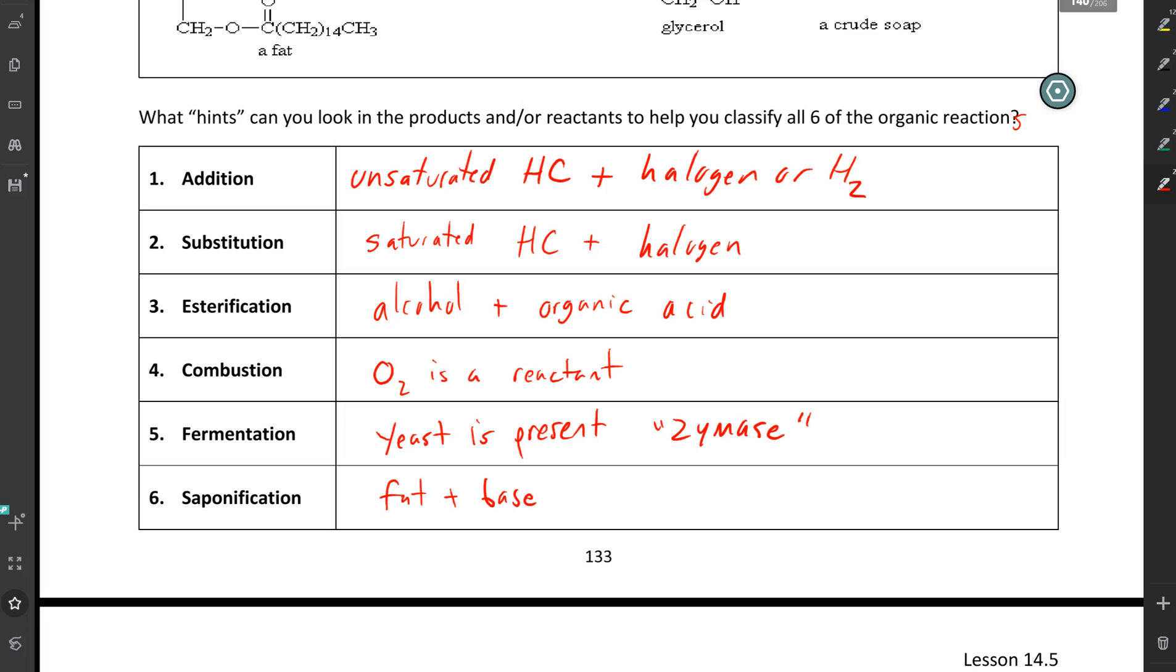A lot of students confuse addition and substitution. They're very similar, both call for a hydrocarbon plus a halogen, but in a substitution reaction, you need a saturated hydrocarbon. It only works with alkanes. We're going to substitute out one hydrogen on the hydrocarbon at a time, and you really don't know about one. It's going to be random.